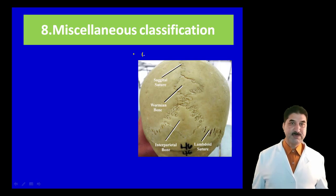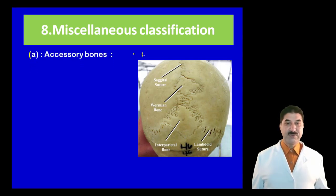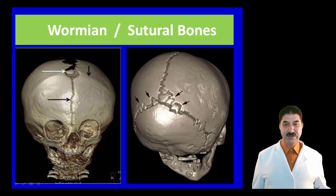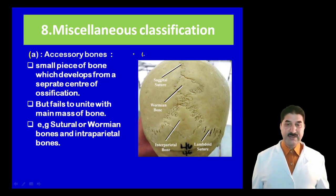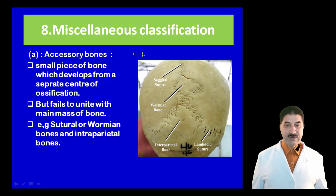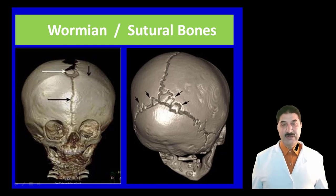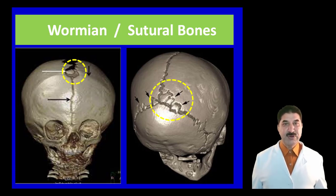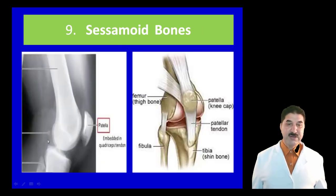Miscellaneous classification of bones: there are accessory bones — small pieces of bone that develop from a separate center of ossification but fail to unite with the main mass of bone. Examples include sutural (Wormian) bones and interparietal bones. In the skull, these are called Wormian bones, usually present in the interparietal suture, and they develop from a separate center of ossification without fusing with the main mass of bone.